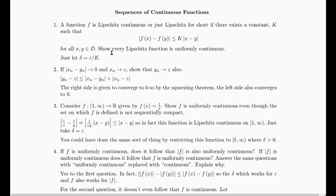Every Lipschitz function is uniformly continuous because if you're given an epsilon, just let delta equal to epsilon over k. Then this would be smaller than epsilon over k, the k's would cancel, and this would be smaller than epsilon. So for any pair of points x and y, if they're closer than this delta, then the difference between f of x and f of y will be less than epsilon. That's what it means to be uniformly continuous.